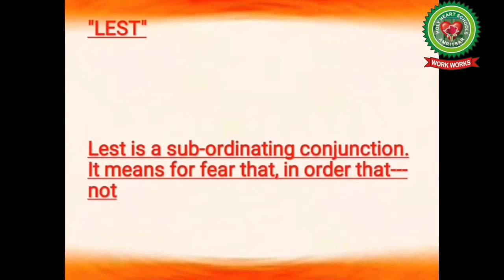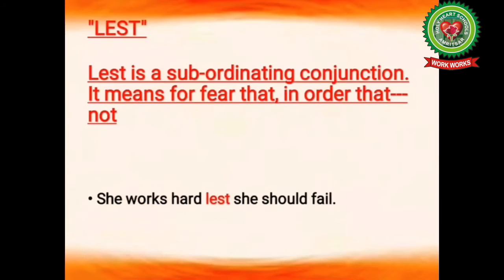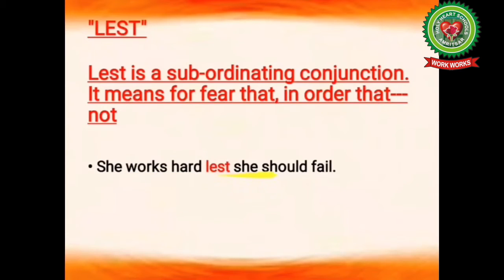The first conjunction we have is 'lest'. Lest is a subordinating conjunction. Keep in mind lest is always followed by 'should'. Lest means to avoid the risk of something. Let's read the example: she works hard lest she should fail. Now why does she work hard? She works hard because she wants to avoid the risk of failing.